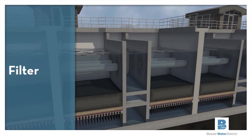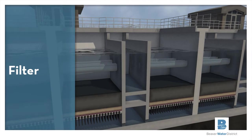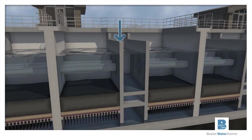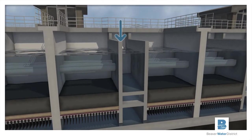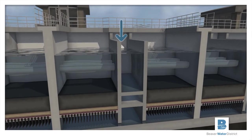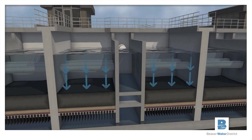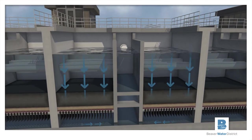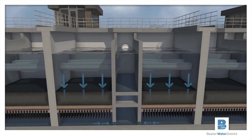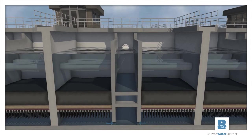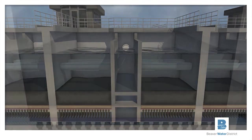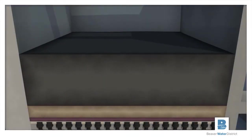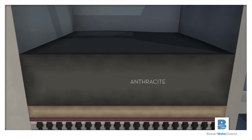The settled water is then piped to the top of the filters where the remaining impurities are removed. The water then simply flows by gravity from the top of the filters to the bottom through the filter media. The filter media is composed of layers of anthracite, sand, and garnet.